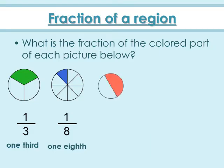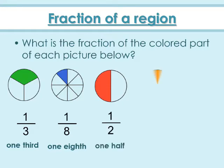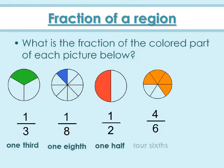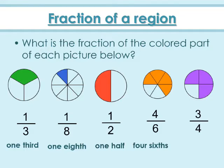The third circle is divided into two equal parts; out of two equal parts, one part is colored, so the fraction is one by two or one half. The fourth circle is divided into six equal parts; out of six equal parts, four parts are colored, so the fraction is four by six or four sixths. The fifth circle is divided into four equal parts; out of four equal parts, three parts are colored, so the fraction is three by four or three fourths.